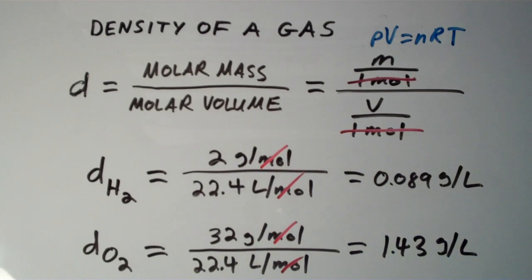Notice that O2 gas, which has a much higher molar mass than H2 gas, is also much more dense. So we can conclude that the density of a gas is directly proportional to its molar mass. This explains why if you fill a balloon with hydrogen or helium, it will float, because those gases have such small molar masses that their densities are lower than the density of air.